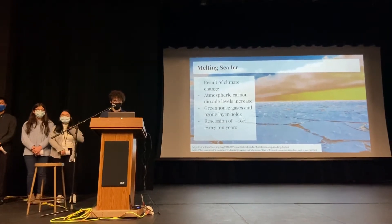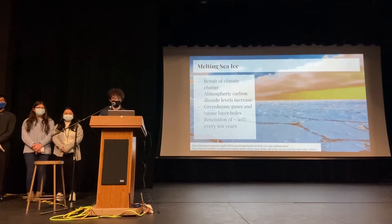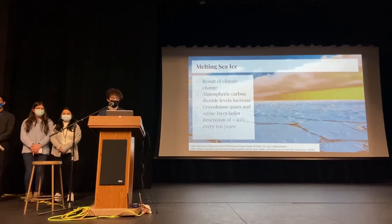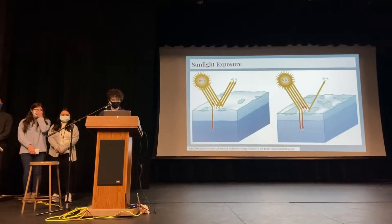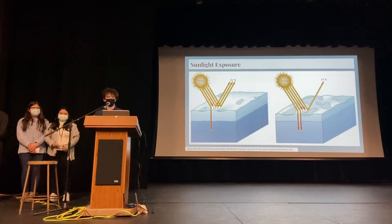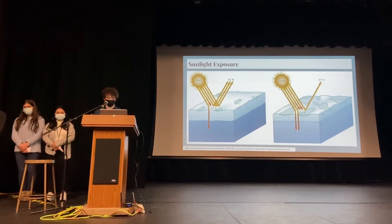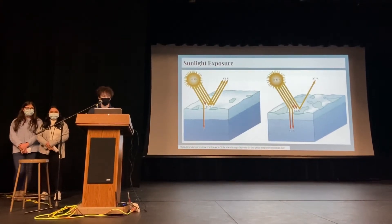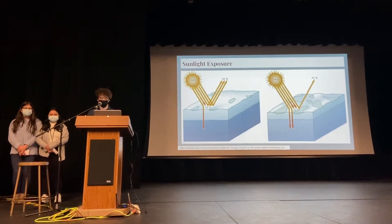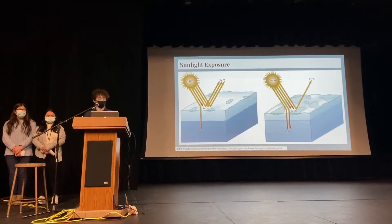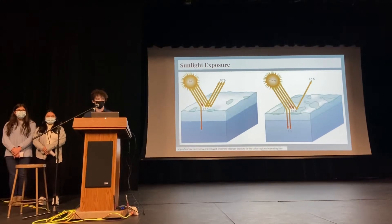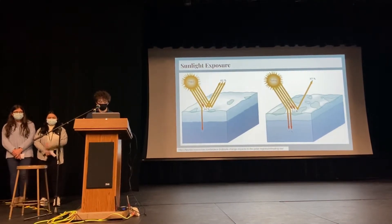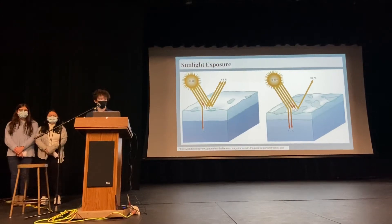As CO2 levels increase, greenhouse gases become more common, causing the ice to melt with a recession of about 10% every 10 years. As sea ice melts, more water is exposed, and with the waters having a darker contrast, more heat is absorbed by the water and the ice. This, in turn, will cause surrounding ice to melt and more open waters to form.